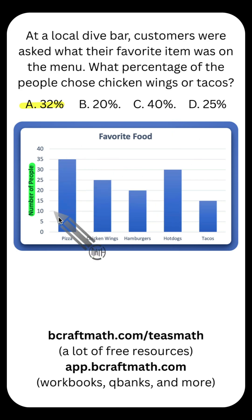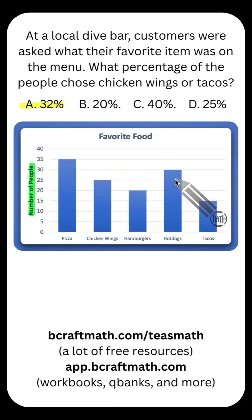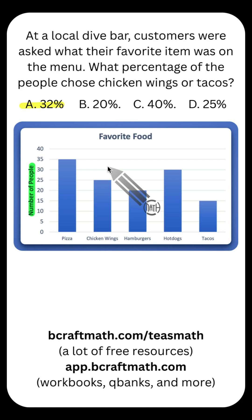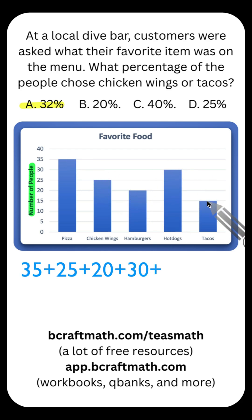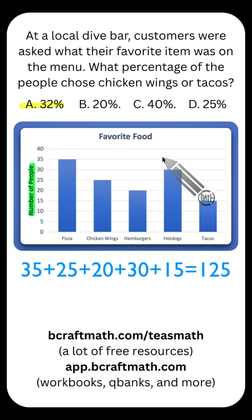It's 40 people out of the total number of people surveyed. So we need to come to these bars and add up all of them — this represents the total number of people surveyed. We have 35 plus 25 plus 20 plus 30 plus 15. Yes, you do have to include the chicken wings and the tacos in that to get the total: 125 people. So 40 out of 125 people chose either chicken wings or tacos.